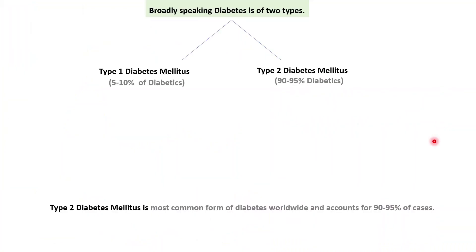Broadly speaking, diabetes is of two types: type 1 and type 2. Type 2 diabetes is most common worldwide and accounts for 90 to 95% of cases. In this video, I shall be restricting my discussion to type 2 diabetes.